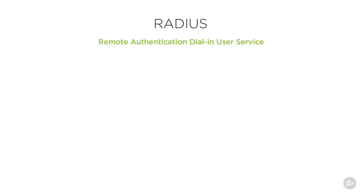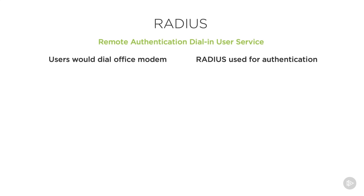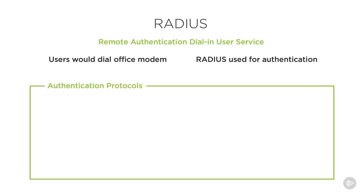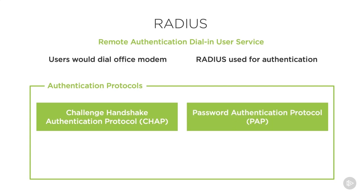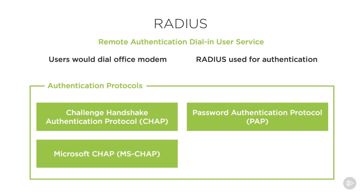RADIUS is an acronym that stands for Remote Authentication Dial-In User Service. It was designed back when remote employees needed to access their organization's resources by using a modem to dial into the organization. RADIUS was used to verify access. The authentication protocols inside of RADIUS to carry authentication information are Challenge Handshake Authentication Protocol (CHAP), Password Authentication Protocol (PAP), and Microsoft CHAP (MSCHAP).